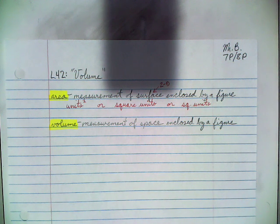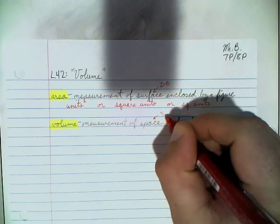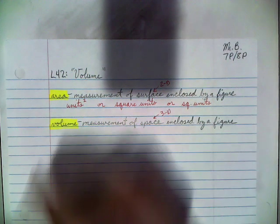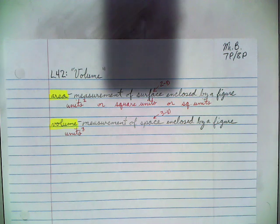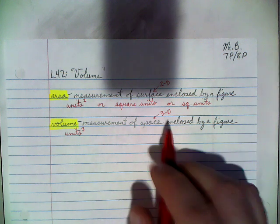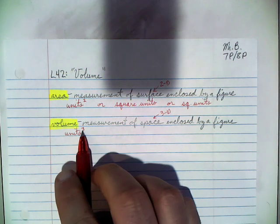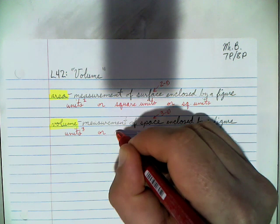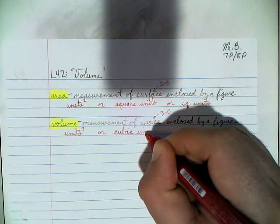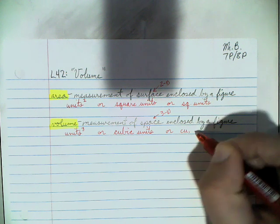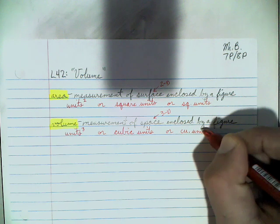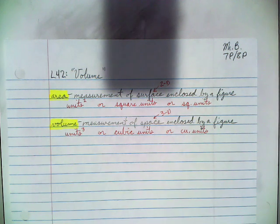When we get to volume, volume is a measurement of space enclosed by a figure. And space is 3D. So instead of square units, it's going to have cubic units. Because it's 3D it'll have an exponent of 3. You could write that out as cubic units, or cubic is abbreviated as Cu. Each one of these are the same.